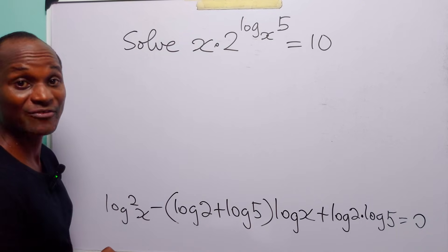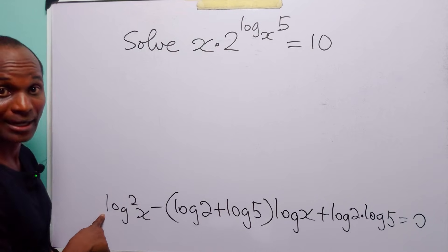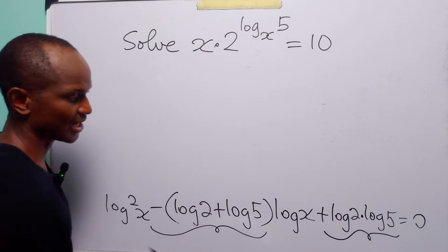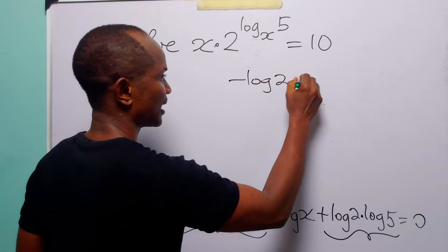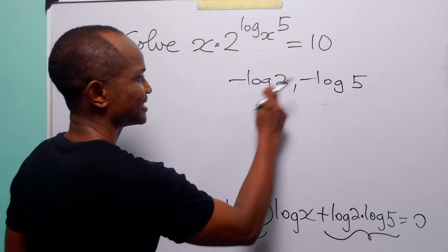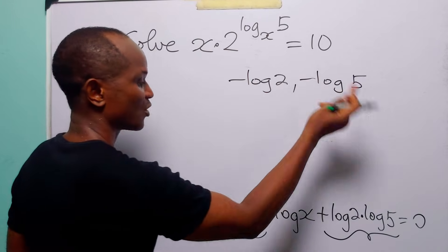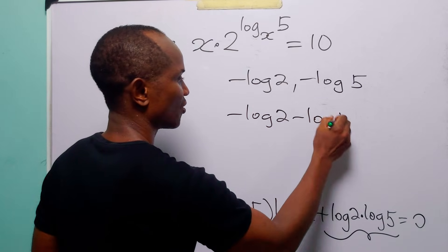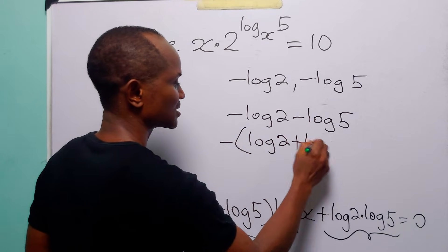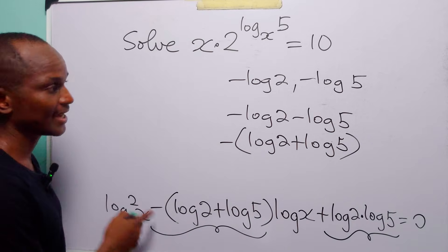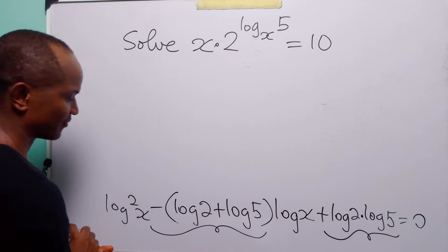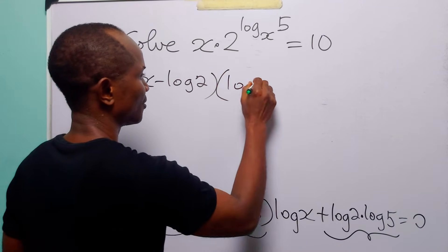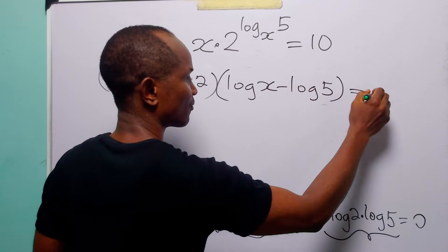When you look at this equation, it is easy to see that it is a quadratic equation in log x, and we can solve it by factorization. Since the coefficient of log squared x is 1, we need factors of log 2 times log 5 that add up to minus log 10. Those factors are minus log 2 and minus log 5, because minus log 2 times minus log 5 gives plus log 2 log 5, and their sum is minus log 2 minus log 5, which equals minus log 10. So factorizing: (log x minus log 2)(log x minus log 5) equals 0.